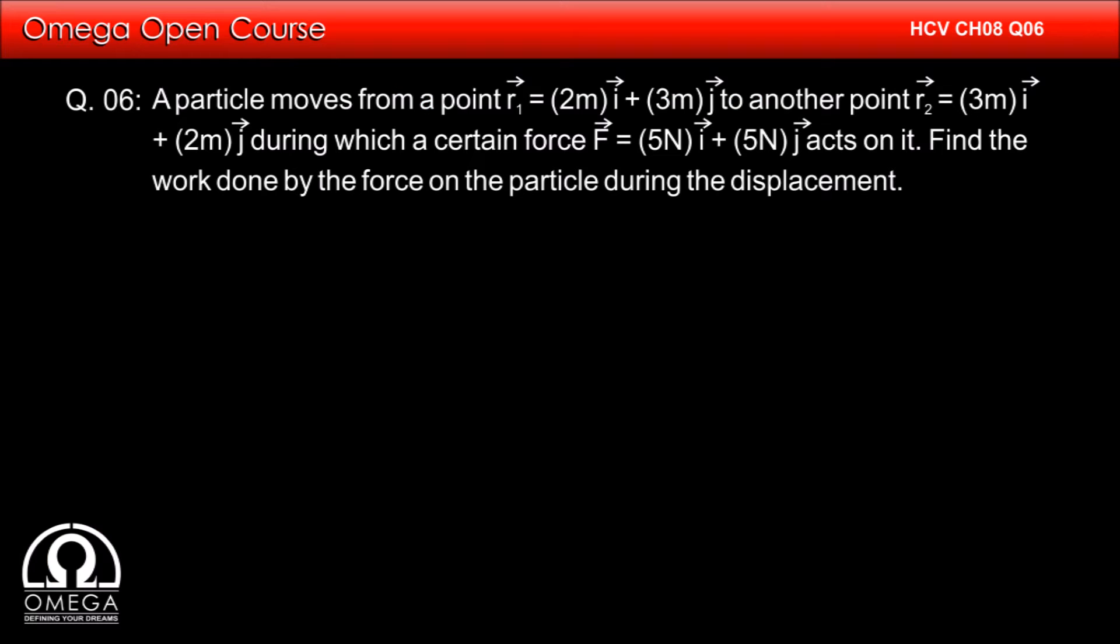A particle moves from point vector r₁ = (2i + 3j) to another point vector r₂ = (3i + 2j) during which a certain force vector F = (5i + 5j) acts on it. Find the work done by the force on the particle during the displacement.